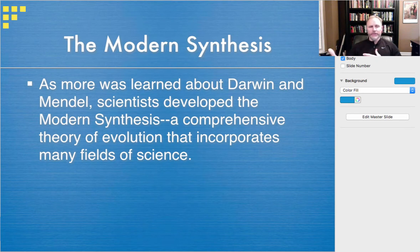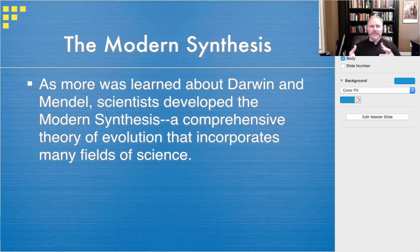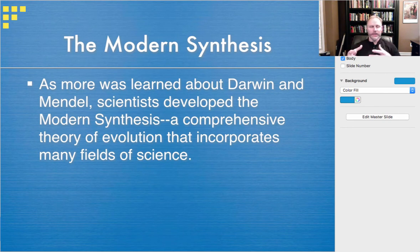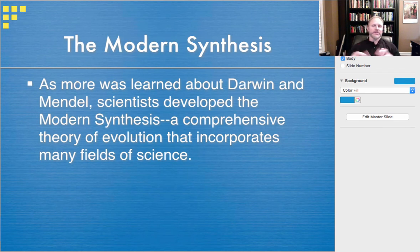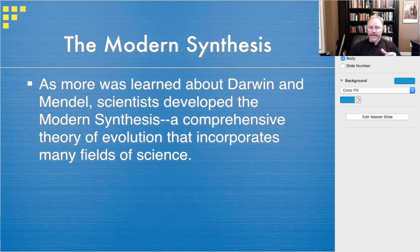As Darwin's and Mendel's work became more accepted in the scientific community, many scientists developed what's known as the modern synthesis — a comprehensive theory of evolution that incorporates many different fields of science: competition for resources, natural selection, the mathematics of how it all works, cytologists studying cells and gene transmission, and reproductive scientists. The modern synthesis ties together multiple branches of science to help people better understand how evolution actually works.